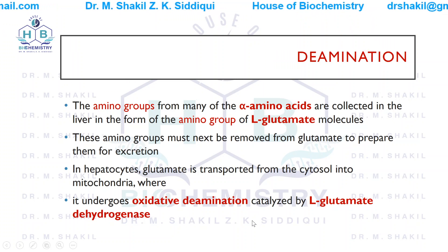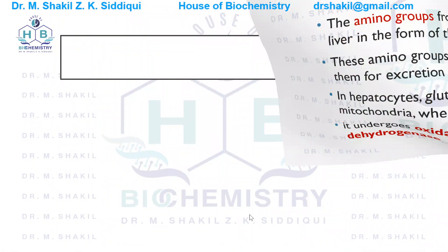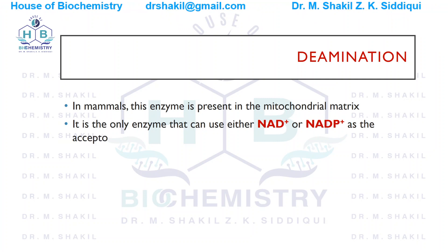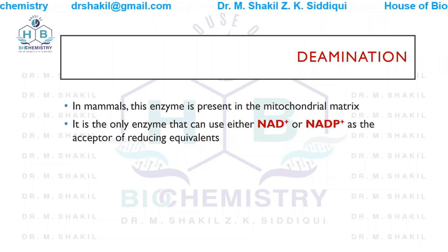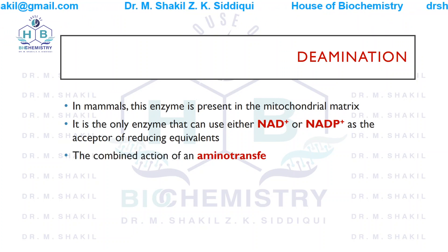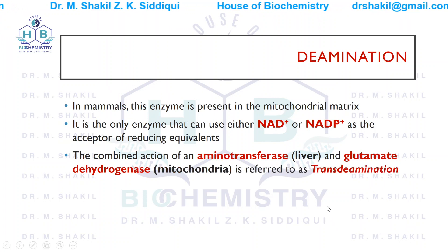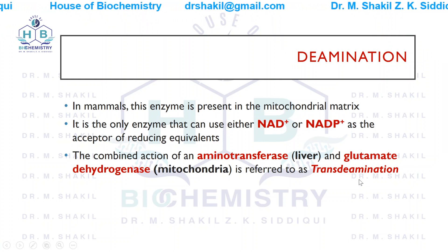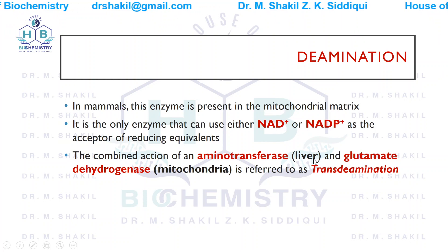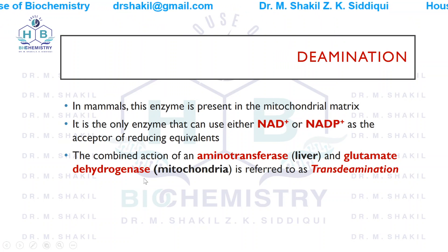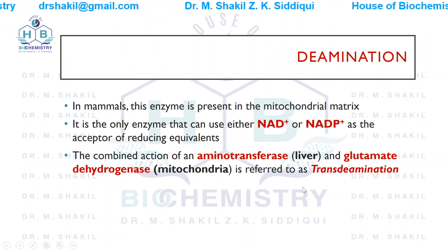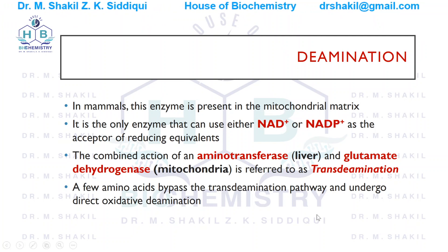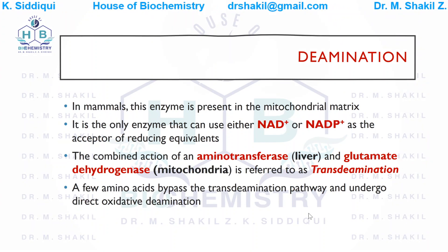In mammals, glutamate dehydrogenase is present in the mitochondrial matrix. It is unique in that it can use either NAD+ or NADP+ as the receptor of reducing equivalents. The combined action of aminotransferase in the cytosol and glutamate dehydrogenase in the mitochondria of the liver is referred to as transdeamination. Only a few amino acids bypass this pathway and undergo direct oxidative deamination.